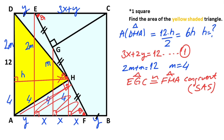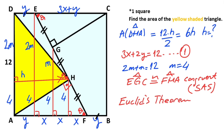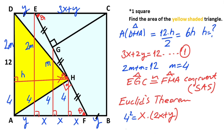Now if you focus on this triangle, we can apply the geometric mean (altitude) theorem. According to the theorem: 4 squared equals the first part x times the second part 2x plus y. So if you organize the equation: 2x squared plus xy minus 16 equals 0. This is the second equation.